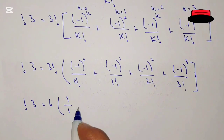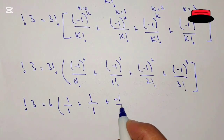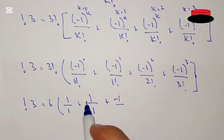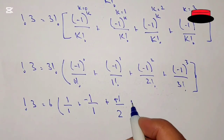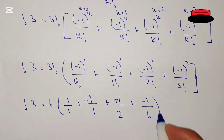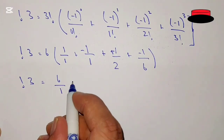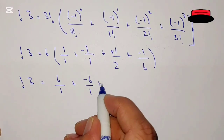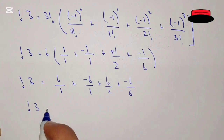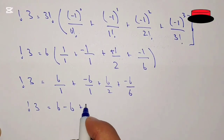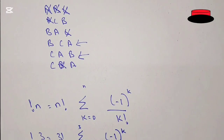Sub factorial 3 equals 6 times: 1 over 1, minus 1 over 1, plus 1 over 2, minus 1 over 6. So sub factorial 3 equals 6 over 1, minus 6 over 1, plus 6 over 2, minus 6 over 6 — which simplifies to 6 minus 6 plus 3 minus 1. Therefore sub factorial 3 is 2, confirming it has exactly 2 permutations.